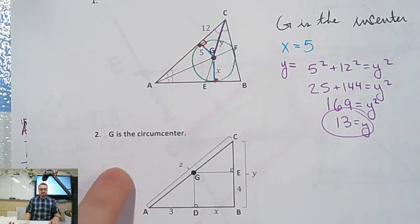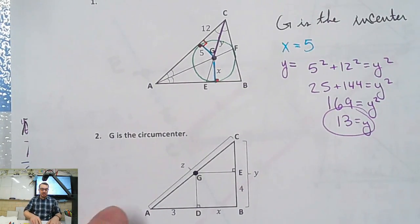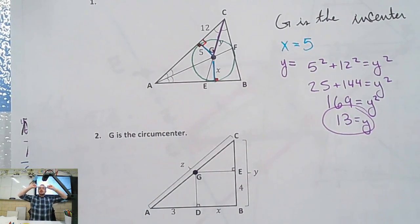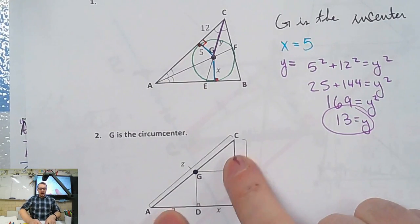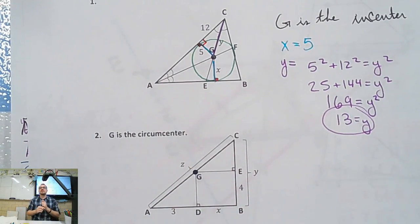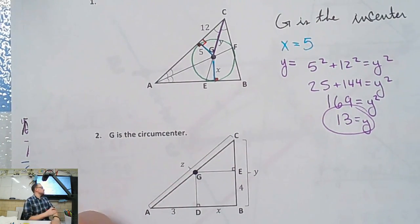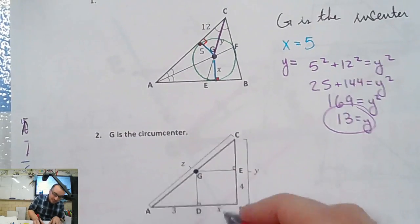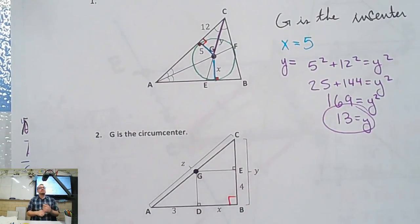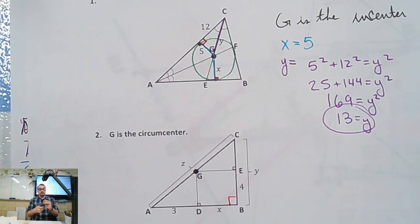G is the circumcenter. If the circumcenter is on the triangle, what kind of triangle must this be? When is the circumcenter on the triangle? It's a right triangle. So these will be similar to ones we have on the quiz — best of luck. We'll review these tomorrow, but hopefully you're doing well on your own at home.